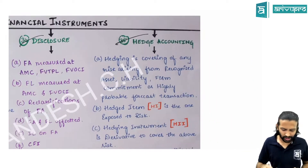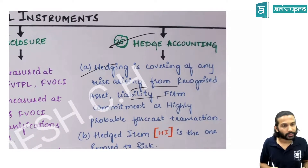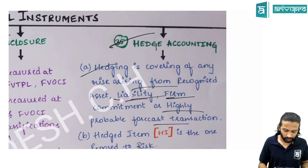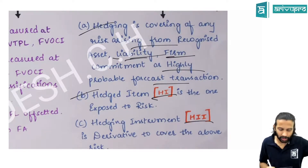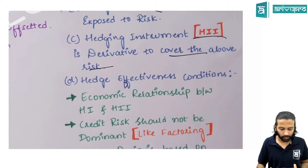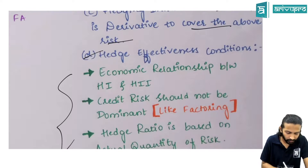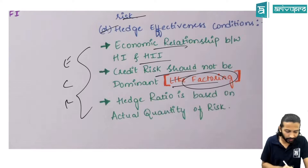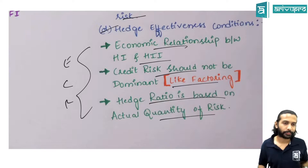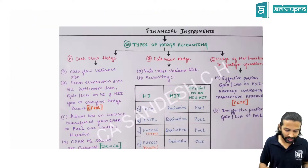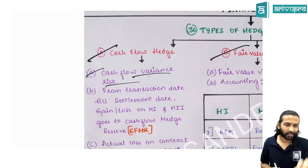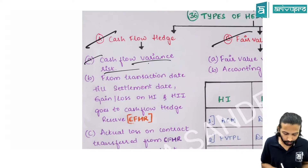Hedge accounting: hedging is used to cover risk from recognized assets/liabilities, firm commitments, or highly probable forecast transactions. There are two instruments: the hedged item (exposed to risk) and the hedging instrument (used to cover risk). Three qualifying conditions (ECR): (1) economic relationship between hedged item and hedging instrument; (2) credit risk must not be dominant; (3) hedge ratio must be based on actual quantity of risk.